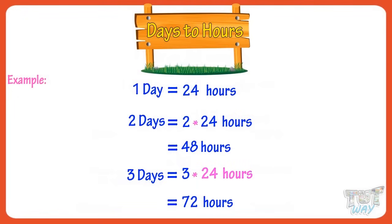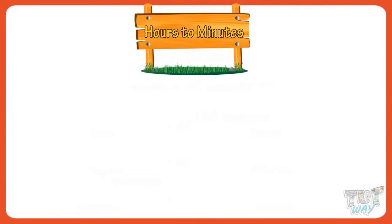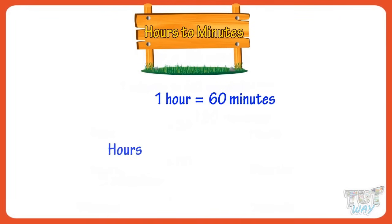Now let's learn how we can convert hours into minutes. Kids, there are 60 minutes in an hour. So to convert hours into minutes, we need to multiply hours with 60.